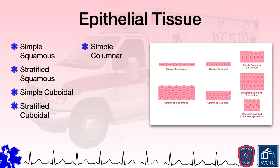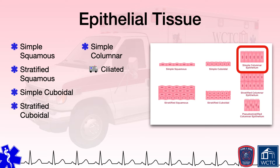Simple columnar epithelial tissue consists of a single layer of cells that are taller than they are wide. These tissues line the stomach and intestines and serve to protect those structures while also facilitating the secretion of digestive enzymes and absorption of nutrients within the gastrointestinal tract. Some of the cells within this type of tissue may even be equipped with little hairs known as cilia, which then makes the tissue ciliated. Such ciliated tissue lines portions of the respiratory tract, and the cilia will move foreign particles out of the lungs.